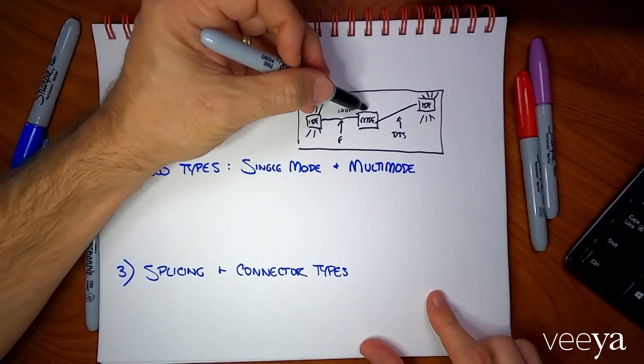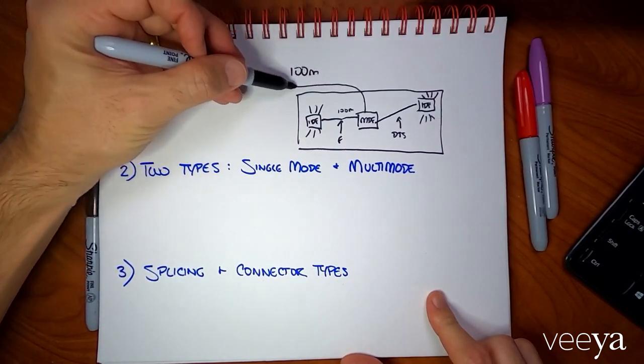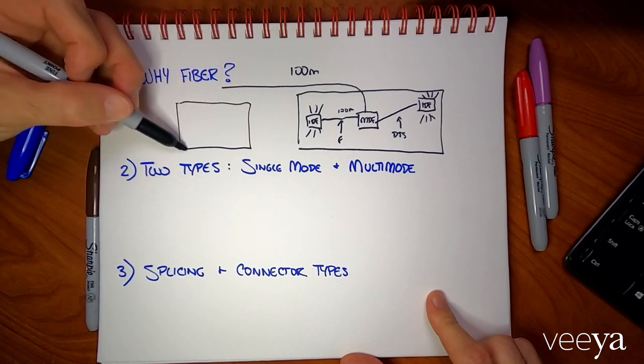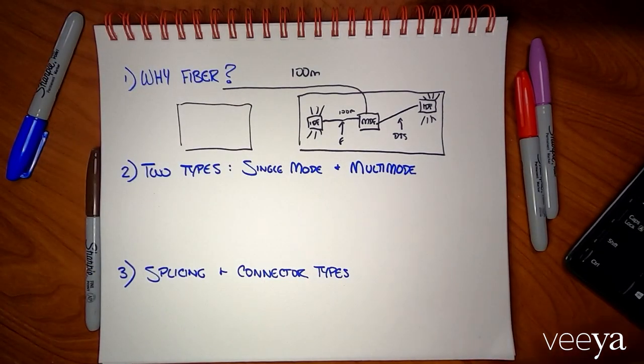This is also valid when you start moving between buildings — this could be crossing roads. Exactly how far can fiber go? Well, it depends on the type of fiber that you buy, which is my next topic, and how much bandwidth you plan to use across that fiber.